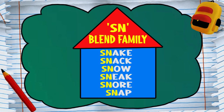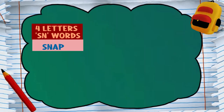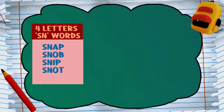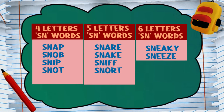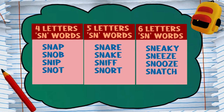You will notice that our words vary in the amount of letters used to spell them. Let's see if we could find more words that belong to the SN blend family. For four letters, we have snap, snob, snip, and snot. For five letters, we have snare, snick, sniff, and snort. And for six letters, we have sneaky, sneeze, snooze, and snatch. As you say these words, listen to ensure they do belong to this blend family. You will again add three more words to the SN blend family list.